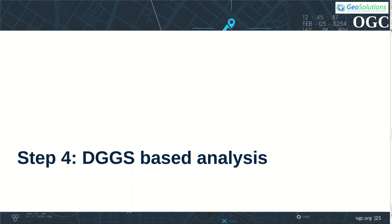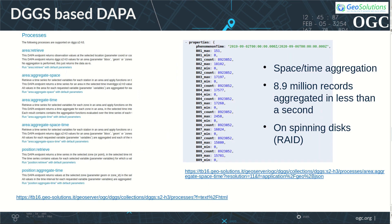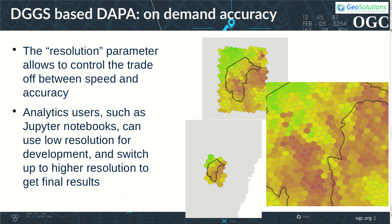To wrap up, let's consider data analysis. The Data Access and Processing API has been developed during Testbed 16 to provide analytics extensions based on collections. In particular, it provides aggregations over position, area, and time ranges, or eventually both. The DGGS flavor of the API allows aggregating zones with a choice of target resolution and a possibility to specify the area of interest as a set of zone identifiers. Aggregations are pushed down to ClickHouse for best performance. As an example, we computed min, max, and count aggregates over the entire area of interest and over all 16 attributes. The request aggregated 9 million records in less than a second, despite having no indexes on the attribute columns. The resolution parameter allows controlling the trade-off between speed and accuracy, so analytics users such as Jupyter Notebooks can use low resolution for development and switch up to higher resolutions for final results.